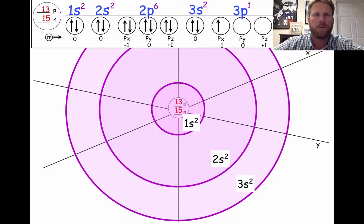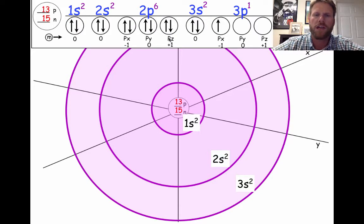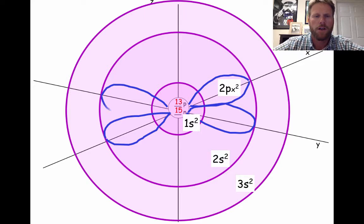So then we label the p orbitals. We can see in the 2p orbital, there are 6 electrons. So 2px, 2py, and 2pz are all going to have 2 electrons in them. So we're going to draw our dumbbell-shaped orbitals all the way out as far as we drew 2s and label each one accordingly, 2px2, 2py2, and 2pz2.